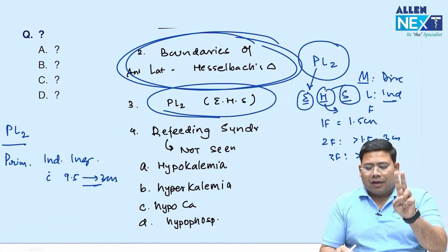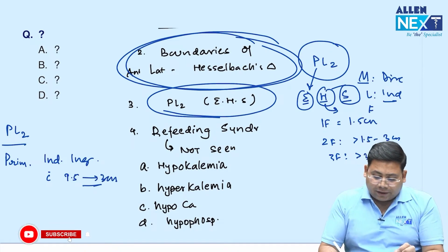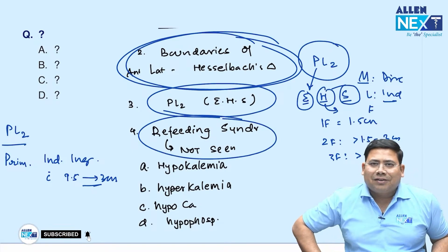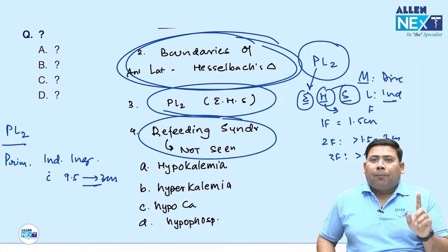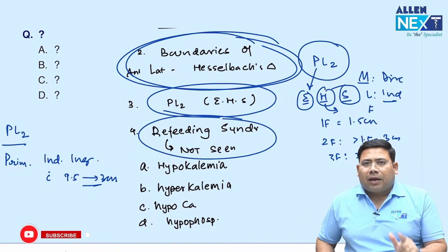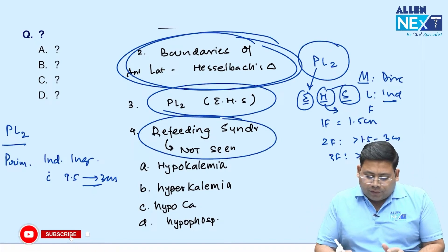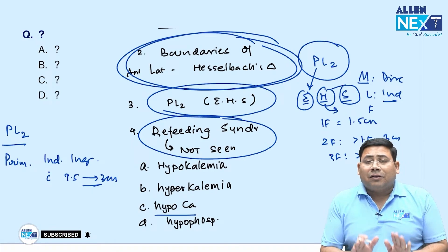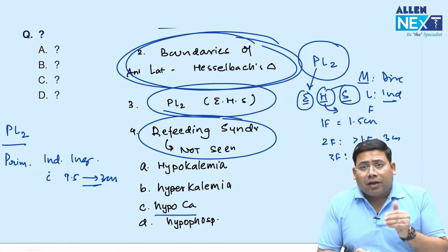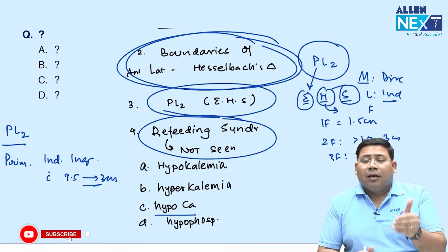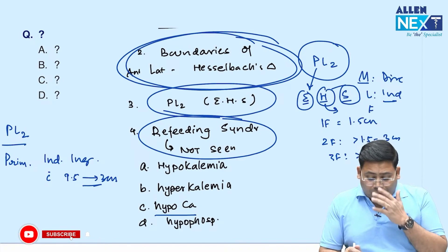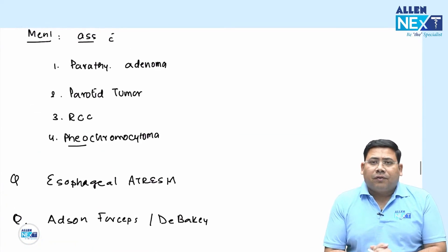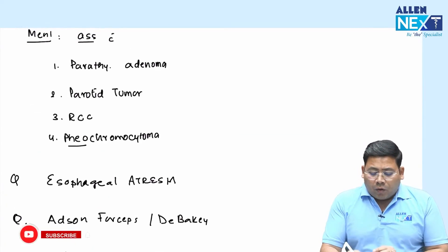Next: what is not seen in refeeding syndrome? Options included hypokalemia, hyperkalemia, hypophosphatemia, and hypocalcemia. Hyperkalemia is not seen in refeeding syndrome. Hypokalemia is present, and hypophosphatemia is the most important electrolyte abnormality in refeeding syndrome.